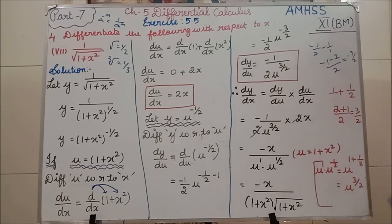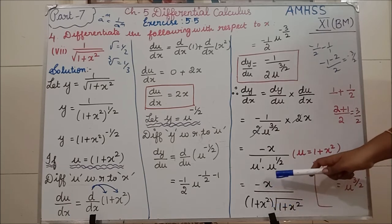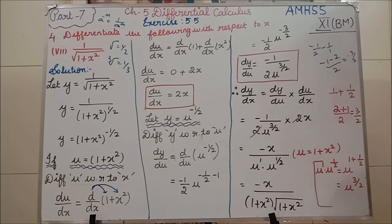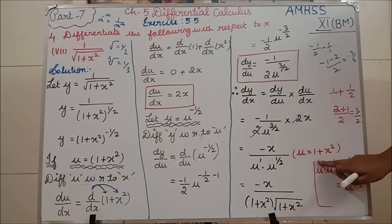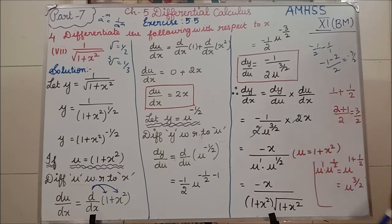Substituting u = 1 + x²: u¹ = (1 + x²) and u^(1/2) = √(1 + x²). So the final answer is dy/dx = −x / [(1 + x²) · √(1 + x²)]. With this, exercise 5.5 is complete.